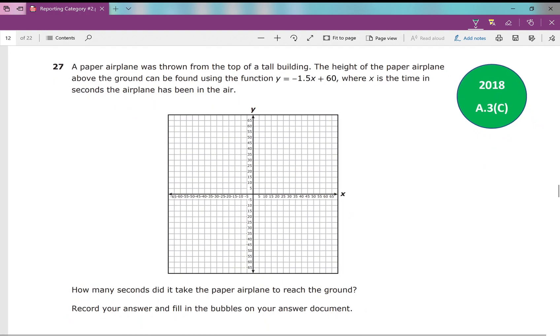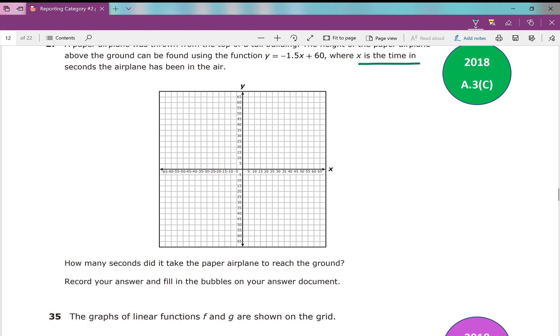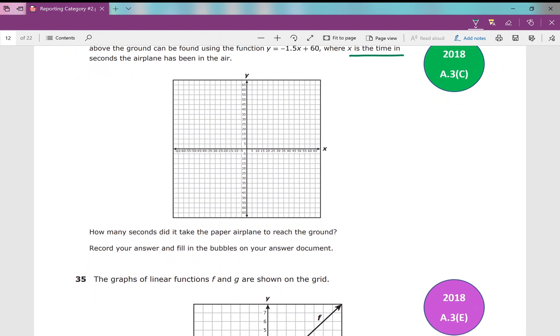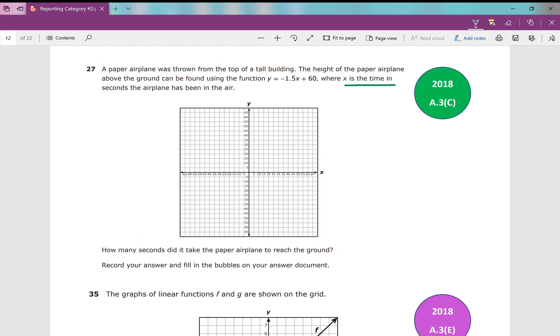Number 27: A paper airplane was thrown from the top of a tall building. The height of the paper airplane above the ground can be found using the function y equals negative 1.5x plus 60, where x is the time in seconds the airplane has been in the air. How many seconds did it take the paper airplane to reach the ground? So there's a lot of stuff going on in this. Our test taking strategy, if you have no idea where to start, what should you do? If you see y equals, plug it into y equals. That's a good test taking strategy. So plug it into y equals. The paper airplane was thrown from the top of a tall building. There's a lot of stuff going on. I don't really know where to start. That's where I start plugging this into y equals.